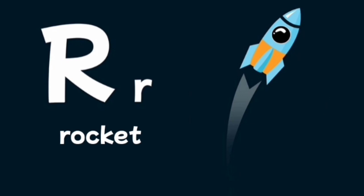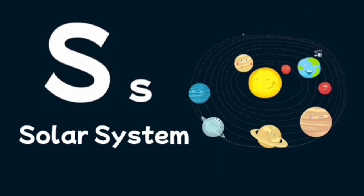R is for rocket, a device used to launch a spacecraft. S is for solar system, a collection of the sun and everything that circles around it.